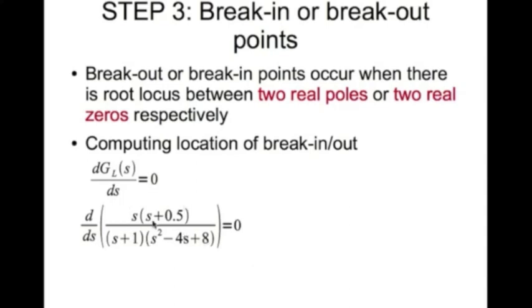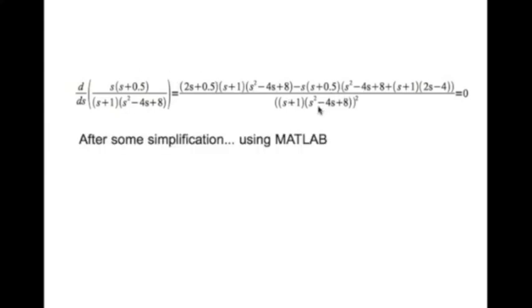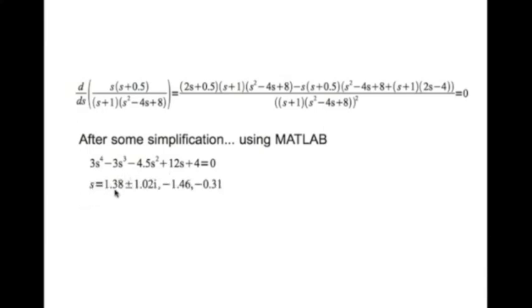You differentiate the loop transfer function and set it equal to zero. You get a really long expression. Be very careful when you do the differentiation. Using MATLAB, I simplified it to get a polynomial equation. Solving it with MATLAB, I get s = 1.38 ± 1.02i, −1.46, and −0.31.